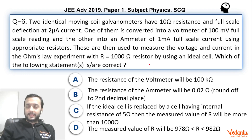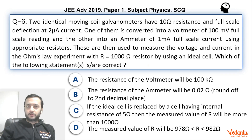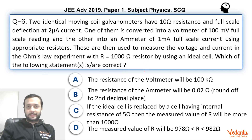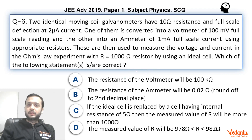Let's see this question from JEE Advanced 2019 Paper 1 Physics. This question was based on verification of Ohm's law with slight calculation. It was a multiple correct choice question — if you get all options right you get plus 4, and for any wrong option you get minus 2, with partial marks available.